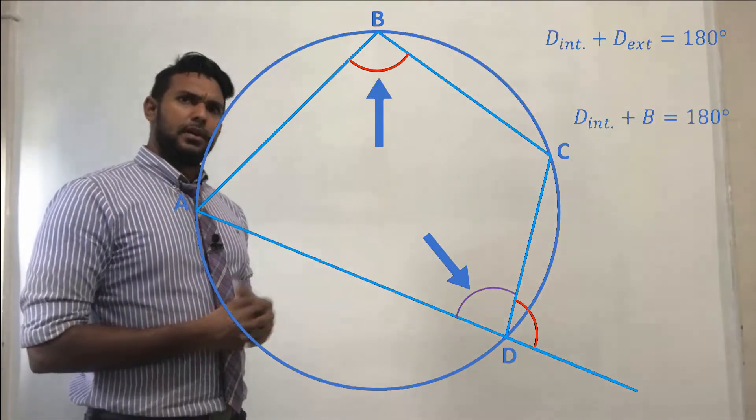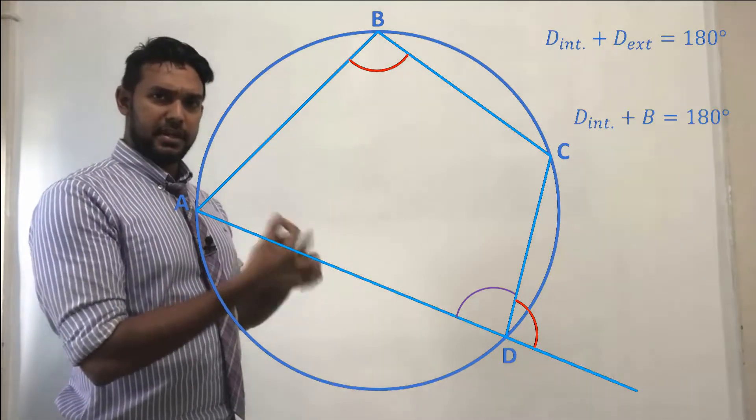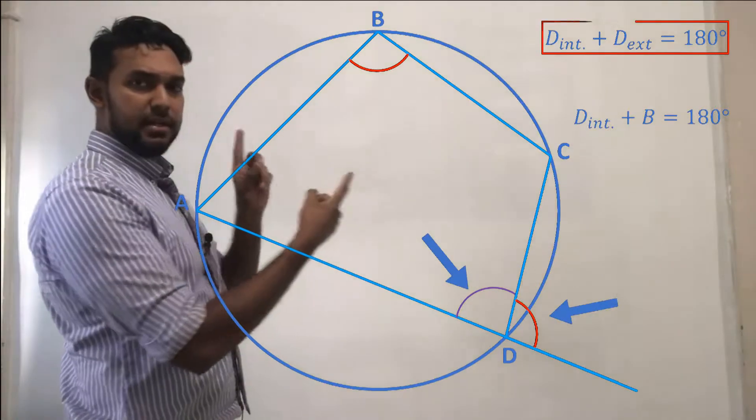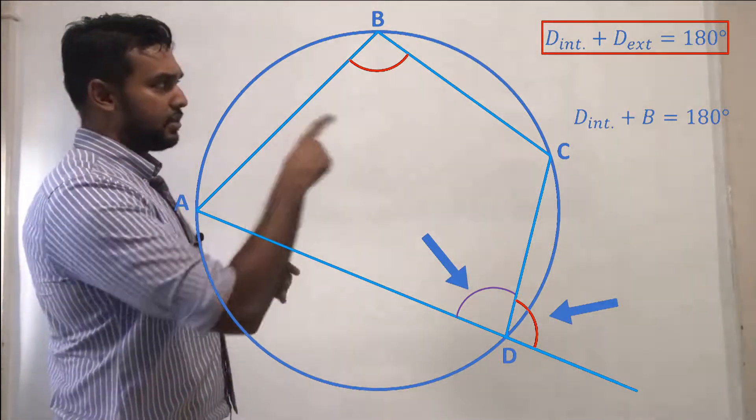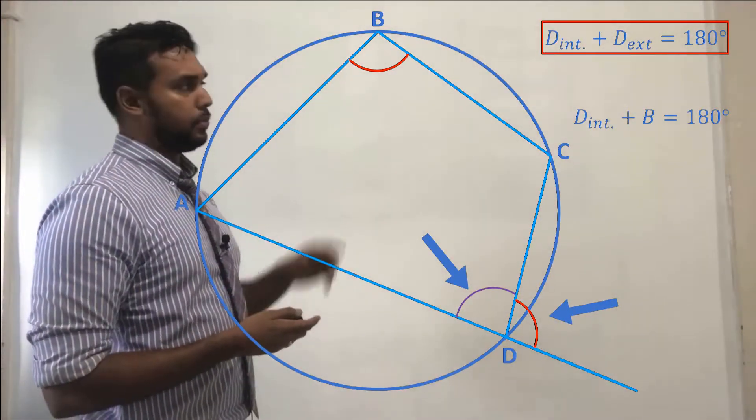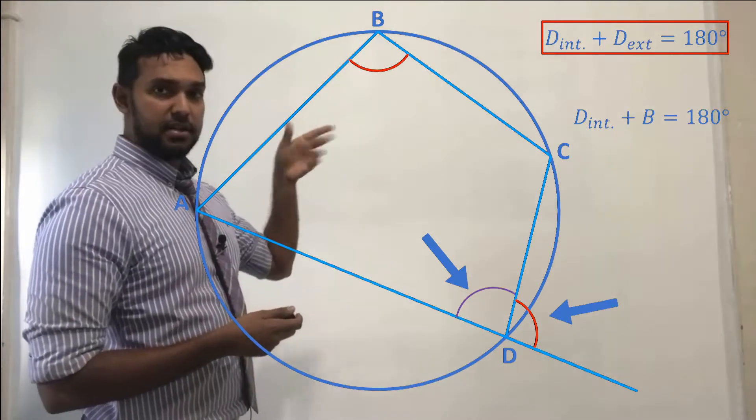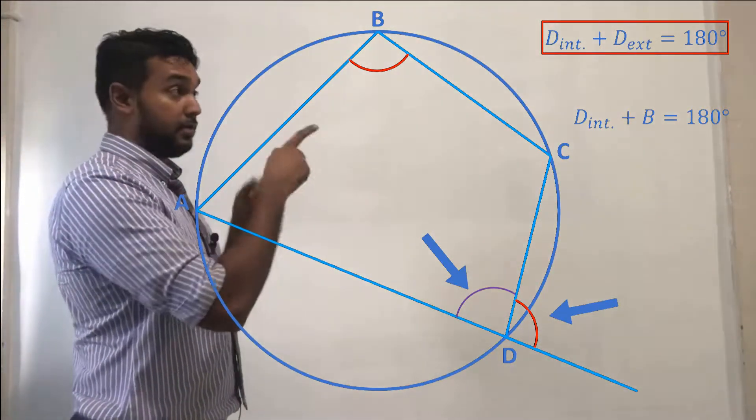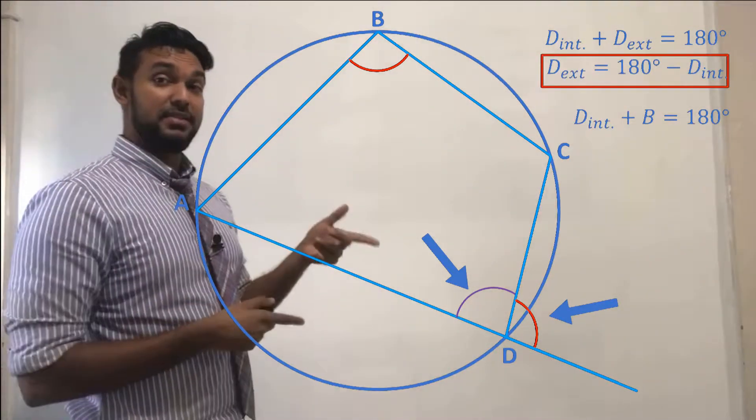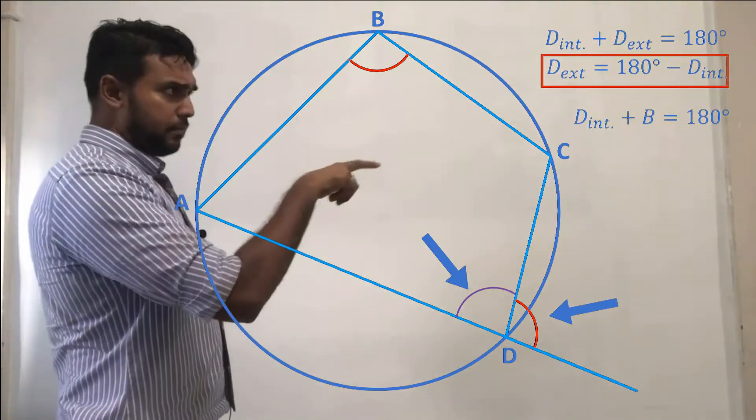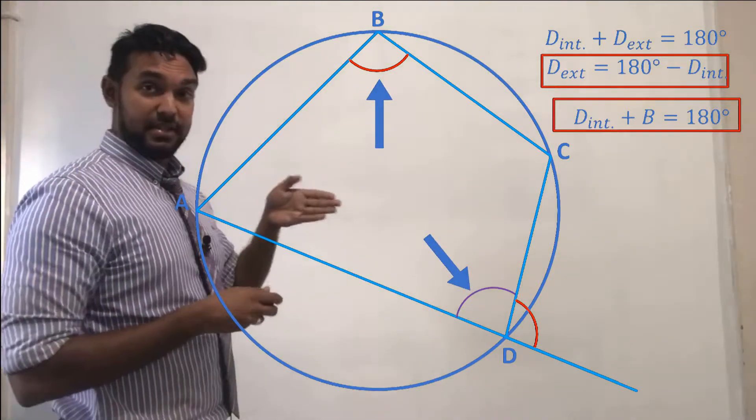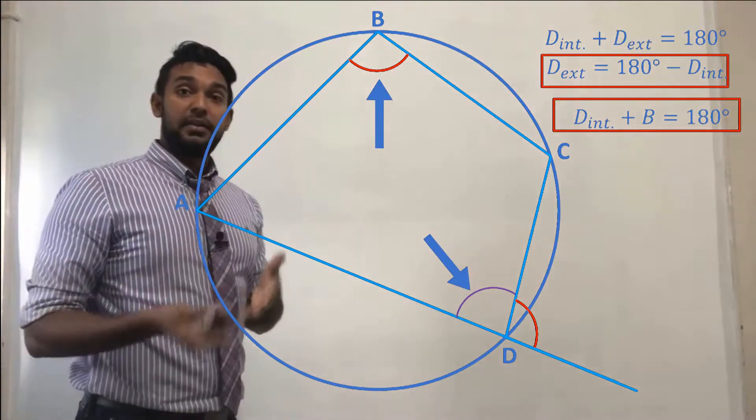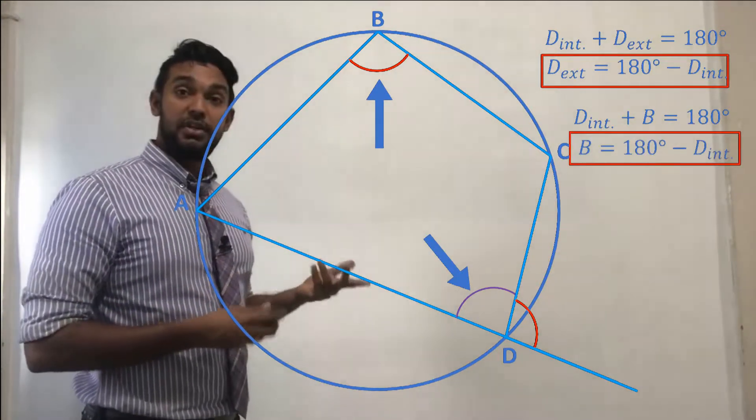Now, all we have to do is solve for the external and B. So if you go back to that first equation with the internal and external components of D, to solve for the external component, what do we have to do? We'd have to subtract the internal component from both sides of the equation, which gives D external equal to 180 minus D internal. Now, let's go to the second equation, which is where we had B plus the internal part of D equal to 180. To solve for B, we'd have to subtract the internal part of D from 180 degrees.